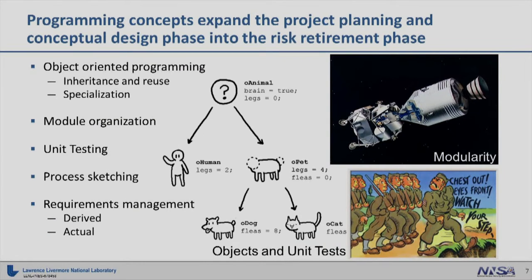Other programming concepts very useful for the risk retirement phase of your project include object-oriented programming. This allows you to start with something somewhat general, and you don't have to throw away all of the work you've done when you want to move to something more specific — you simply inherit everything that has been done on the more general piece already. By modularizing your process, you can have individual teams working on the portion of the problem that is most in their technical capacity, with a straightforward and version-controlled way of interfacing and sharing information. For example, with a lunar lander and a support command module, both have very different tasks but they have an interface through which they must act, and we can formalize that process for your product development team.